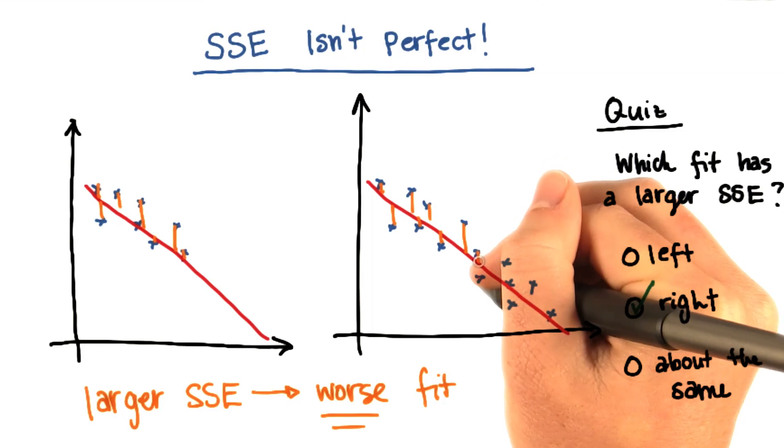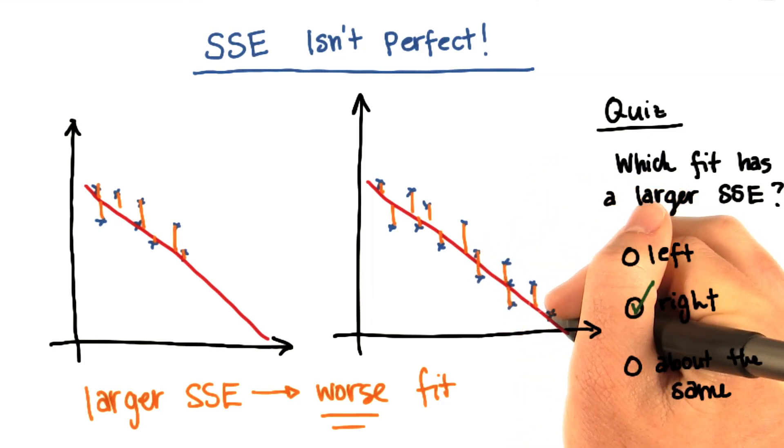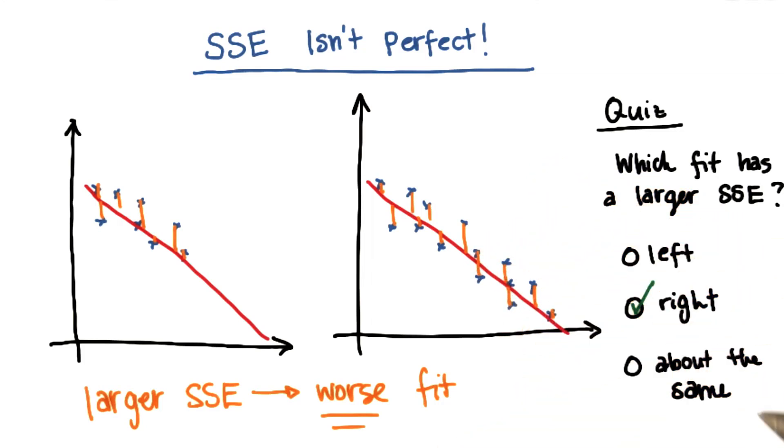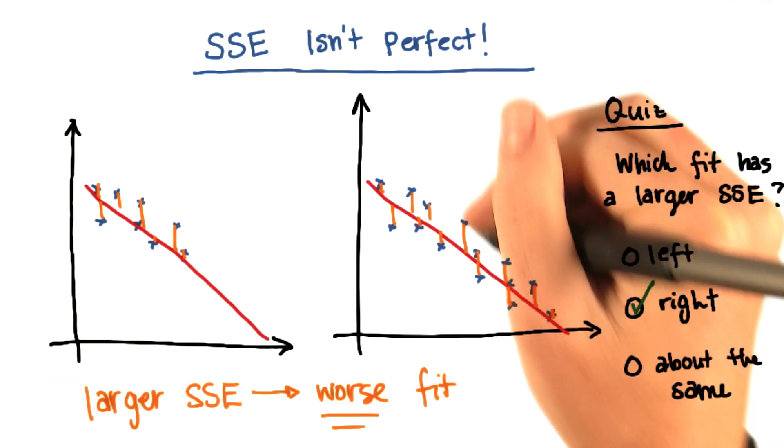But then on the right you have all these additional data points. And each one of those is going to contribute a little bit of error that will add to the overall sum of squared errors of the fit here.